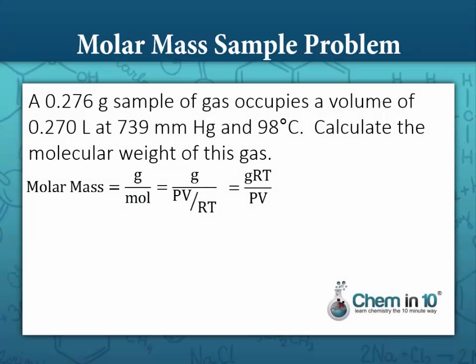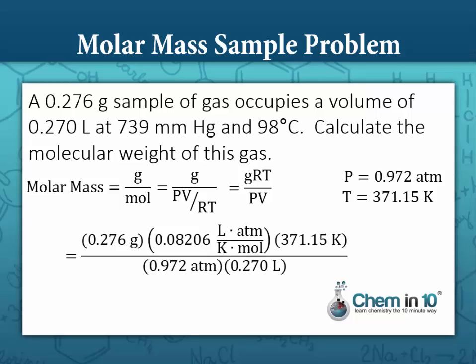Now we plug in the values: mass of 0.276 grams, R is 0.08206 liters atmospheres per k-mol, temperature of 371.15 Kelvin, divided by pressure of 0.972 atmospheres and volume of 0.270 liters. Canceling units, we're left with grams per mole, and our answer is 32.0 grams per mole.